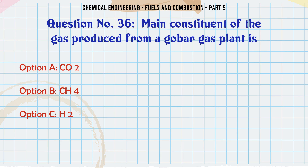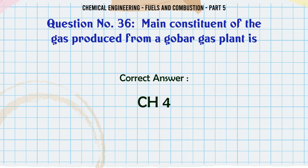Main constituent of the gas produced from a gobar gas plant is: A. CO₂. B. CH₄. C. H₂. D. CO. The correct answer is CH₄.